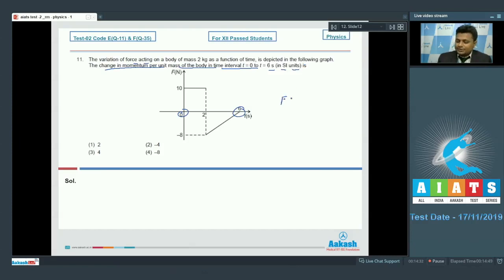Now we must be knowing that force is equal to rate of change of momentum with time. We can write the change in momentum is F delta t, so from here you can write the change in momentum is equal to area under force-time graph.